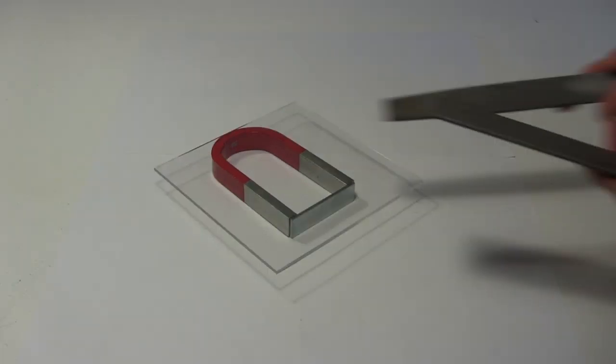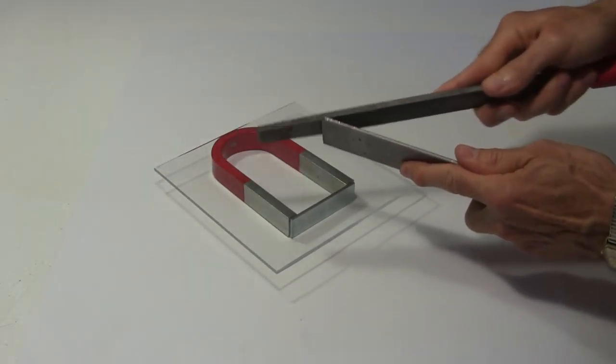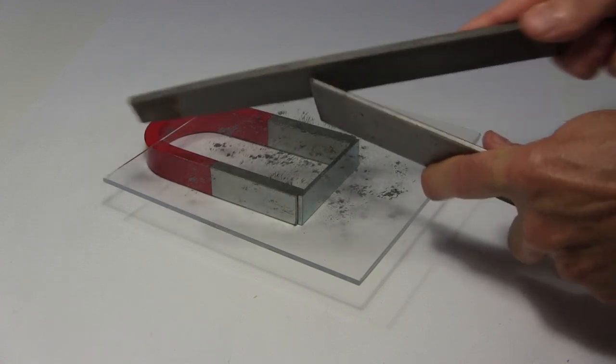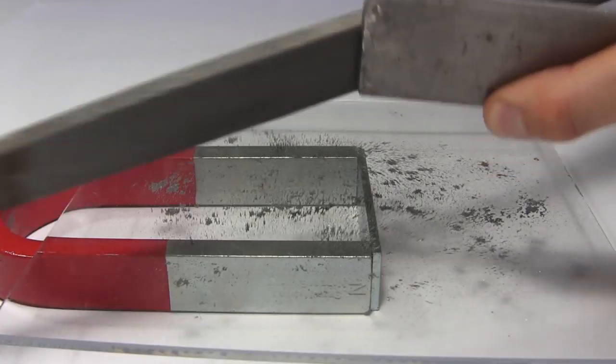A great way to show magnetic fields is to use iron filings, and an easy way to get iron filings is to take a piece of steel and file it using a hand file.